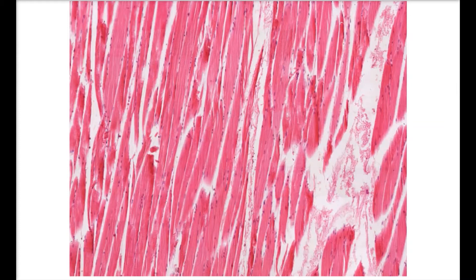The slide we're currently looking at is a longitudinal section of skeletal muscle. In lecture, we learned that skeletal muscle is considered voluntary because it usually doesn't contract unless it receives a signal from a somatic motor neuron. Skeletal muscle attaches to the bones of the skeleton and lets you produce voluntary movements.